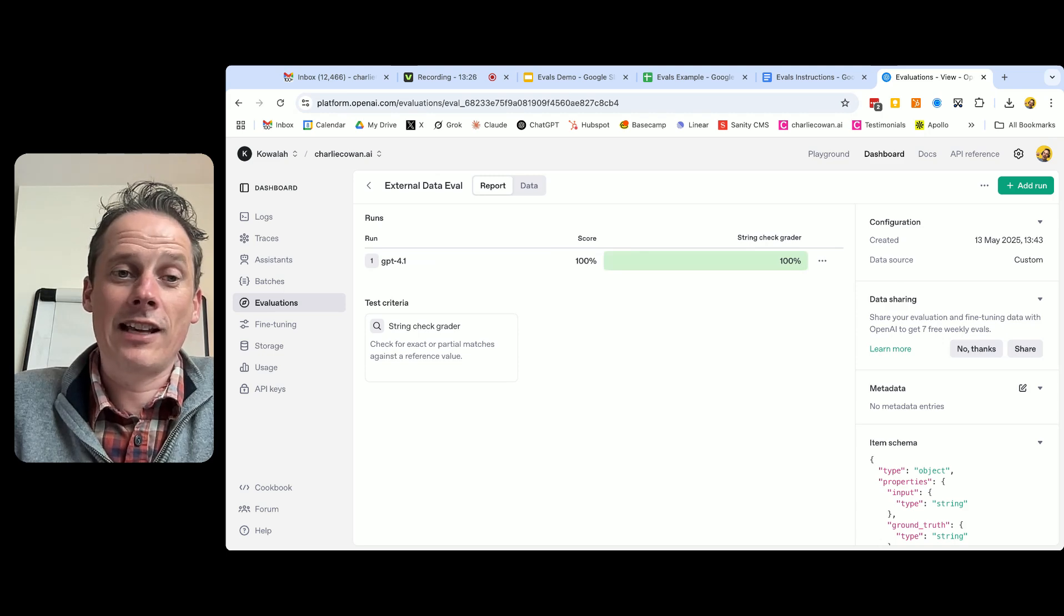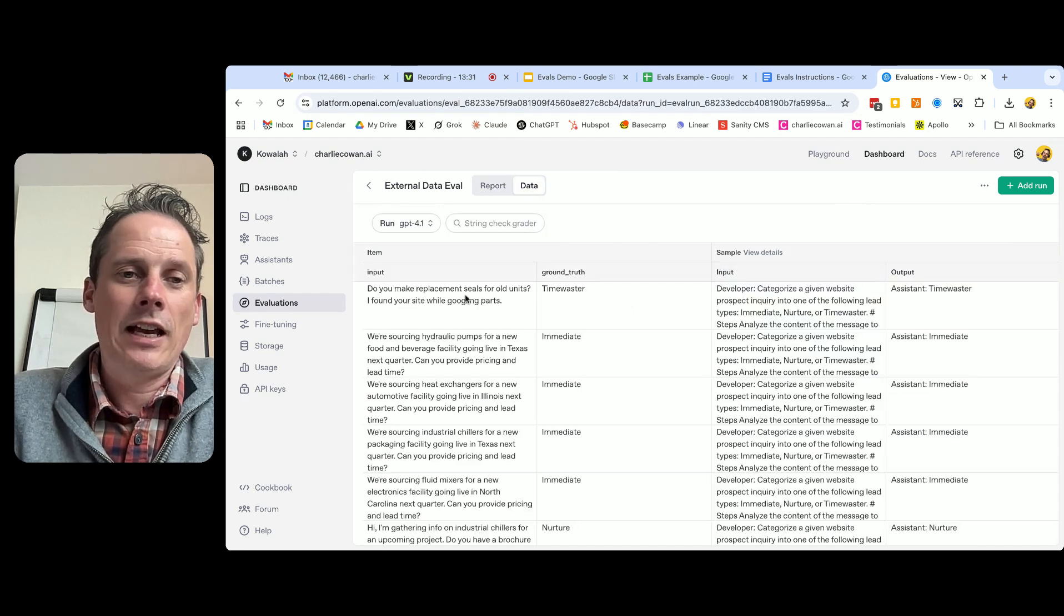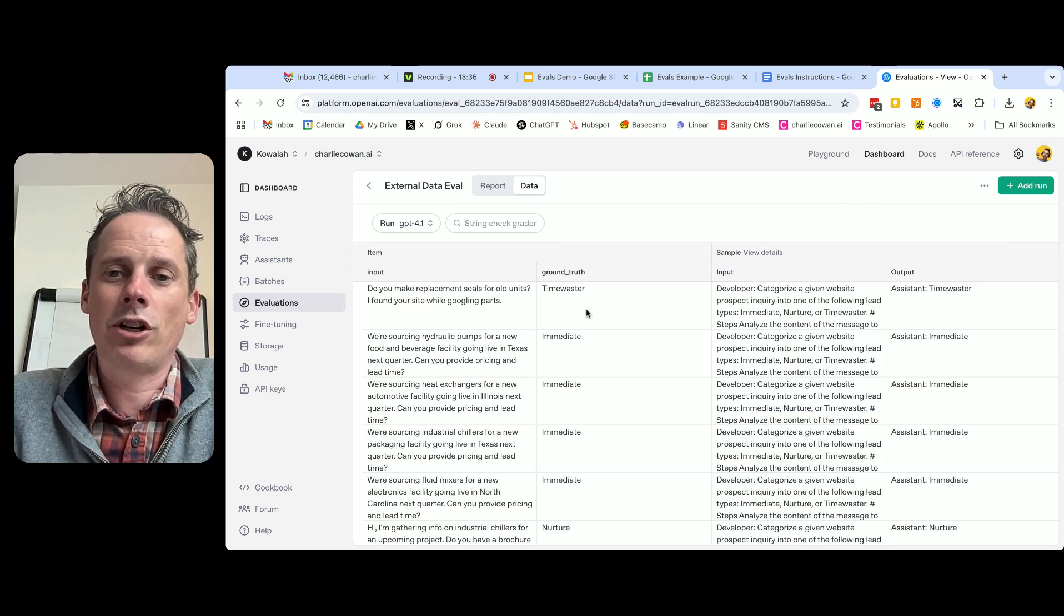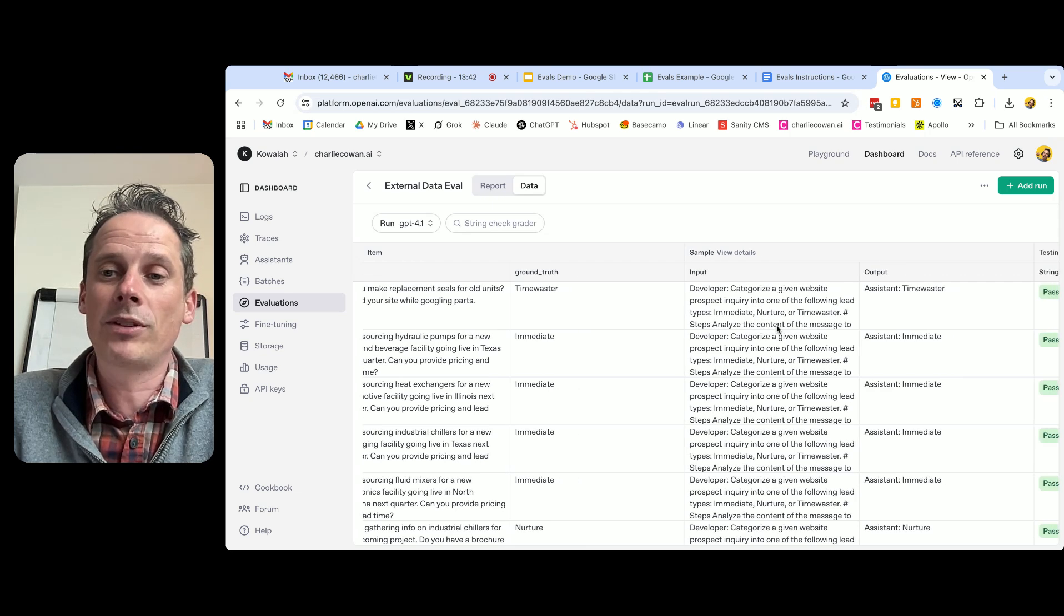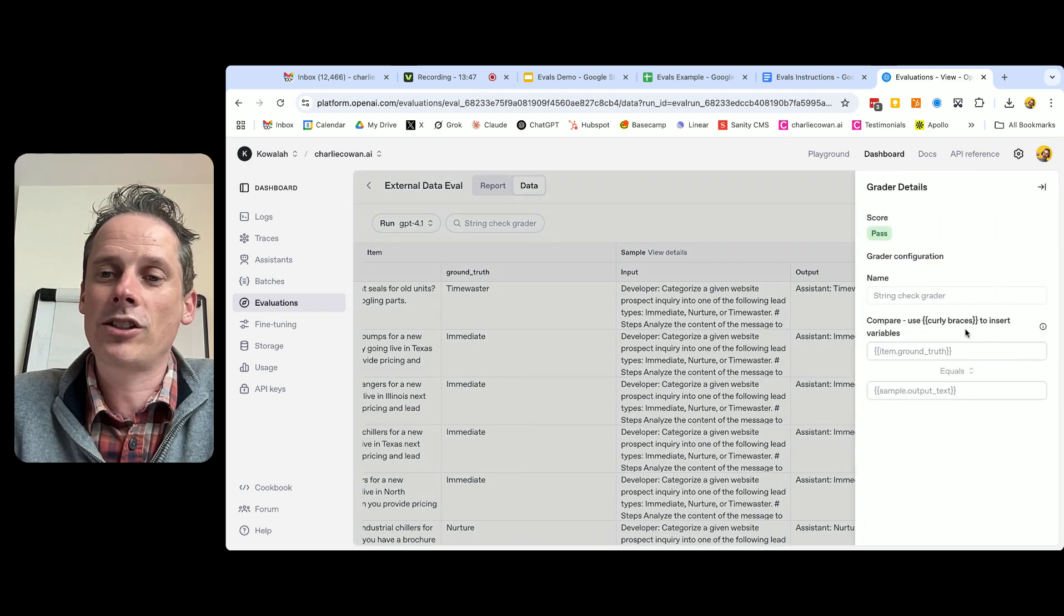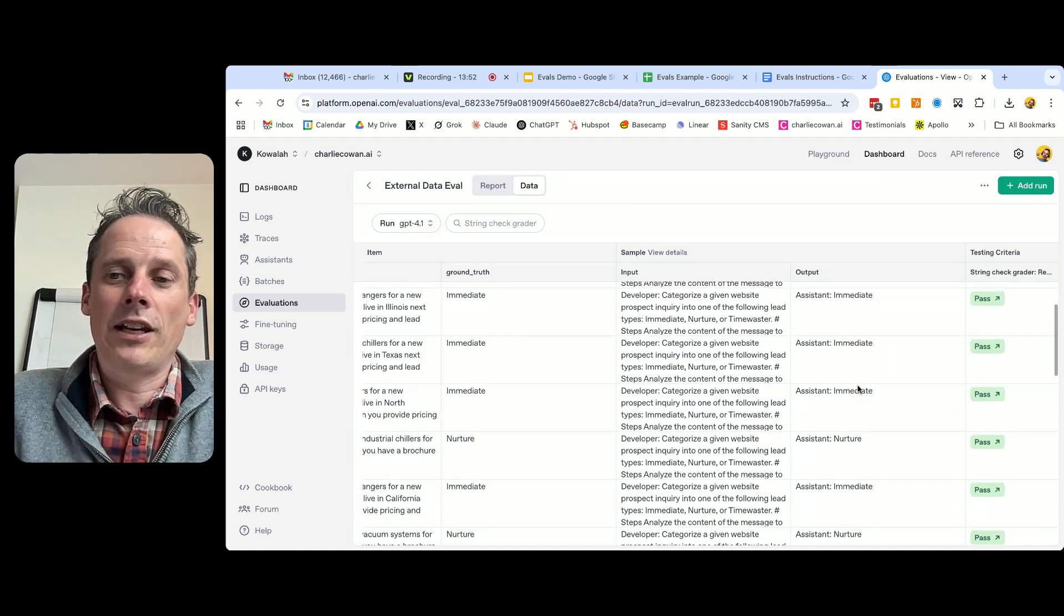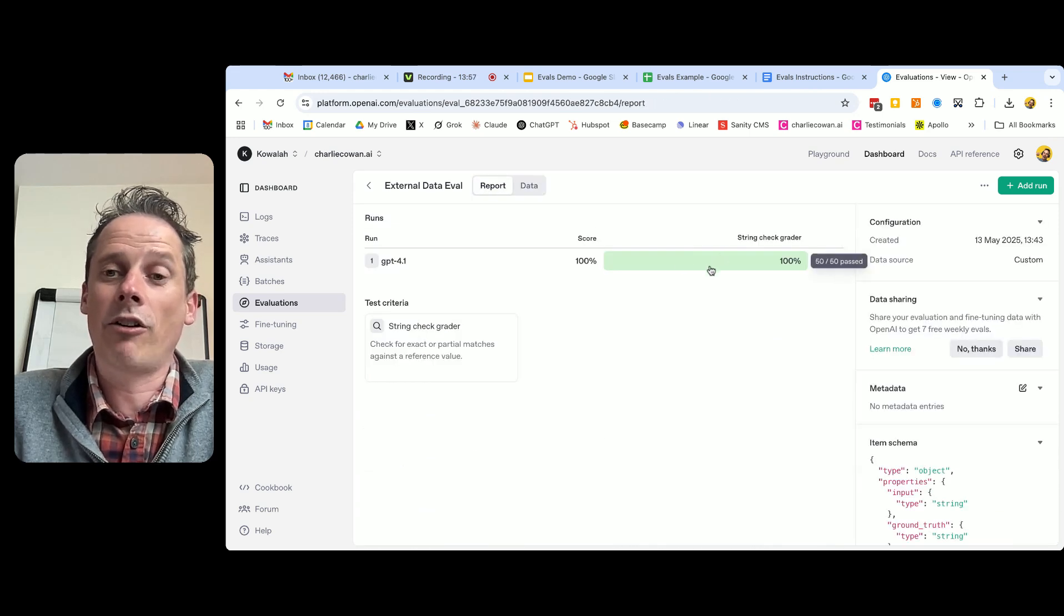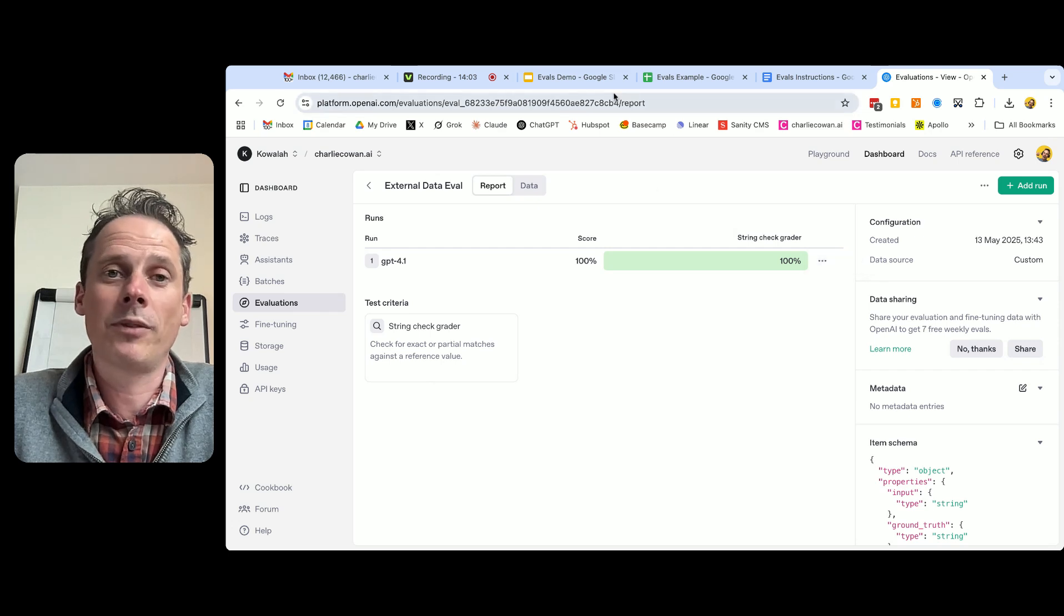And so now that has completed and we can see here we have 100% success, 50 out of 50. And you can see what we get. So here was the input, here was our ground truth, here is what the model was sent - this is our prompt - and then here is what comes back: time waster. And here is a pass, and we can just see here how we're testing that. So that then gives us this confidence that we have 100% success with our current prompt that we will map out against our intended outputs from the humans.